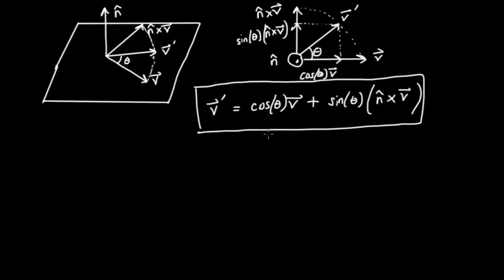So we've solved the problem that we posed to ourselves at the beginning of the video. If I have some vector V and some angle theta that I want to rotate it through, and if it just so happens that the axis of rotation n is perpendicular to V, this is the formula to use to rotate the vector V. Of course we haven't answered the general question of how we rotate V through any axis n, but we've solved a good chunk of the problem. As someone who believes in keeping the abstract nonsense to a minimum, let's actually do a computation.